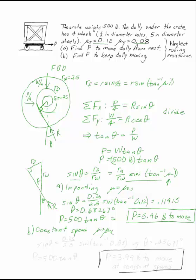Now if I want to move it at a constant speed, mu has to be equal to mu k. So I've got sin theta, same formula, 0.25 over 2.5 sine of tan inverse. But now I've got 0.08, that's mu k needed to keep it moving. That gives you a theta value of 0.45691 degrees. And you can plug that into the same formula, P equals 500 tan theta, P equals 3.99 pounds to move at constant speed.